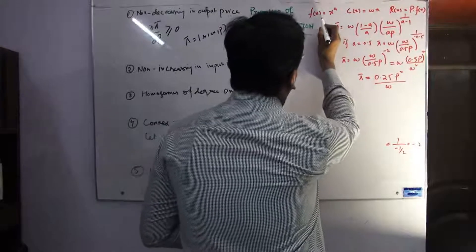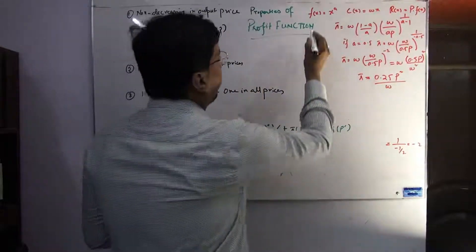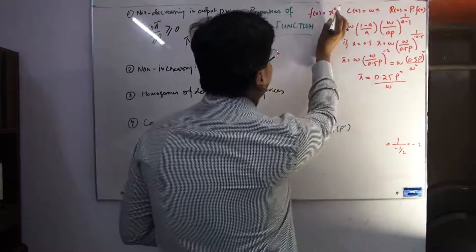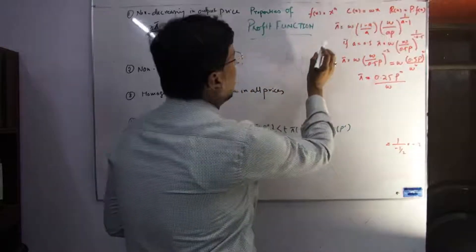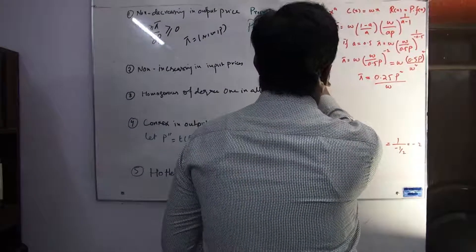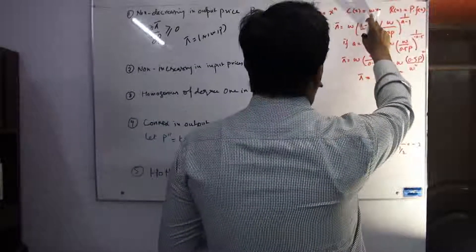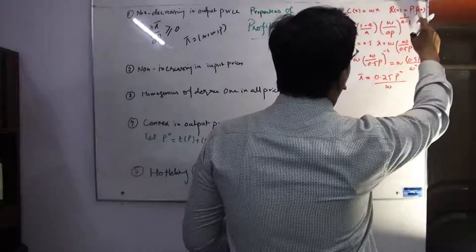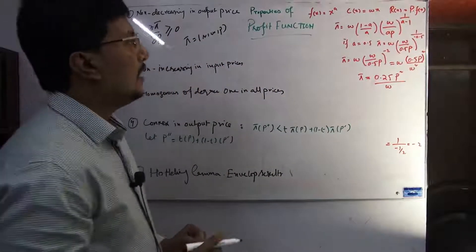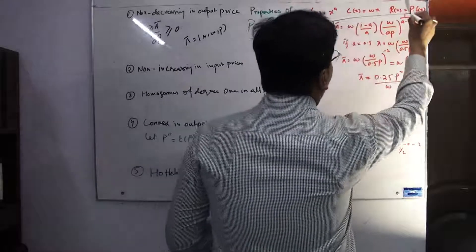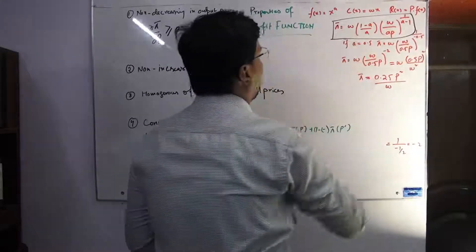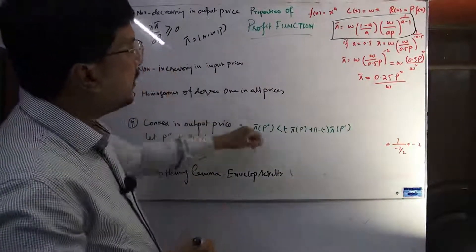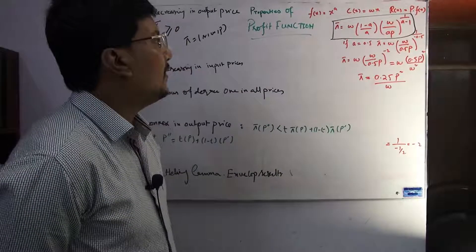We took the case of one input, where production is a function of X with a coefficient representing the elasticity. The cost of production is W·X and the revenue is P·X. We observed that the profit function derived from this case, if we directly apply these properties, will not work in general.